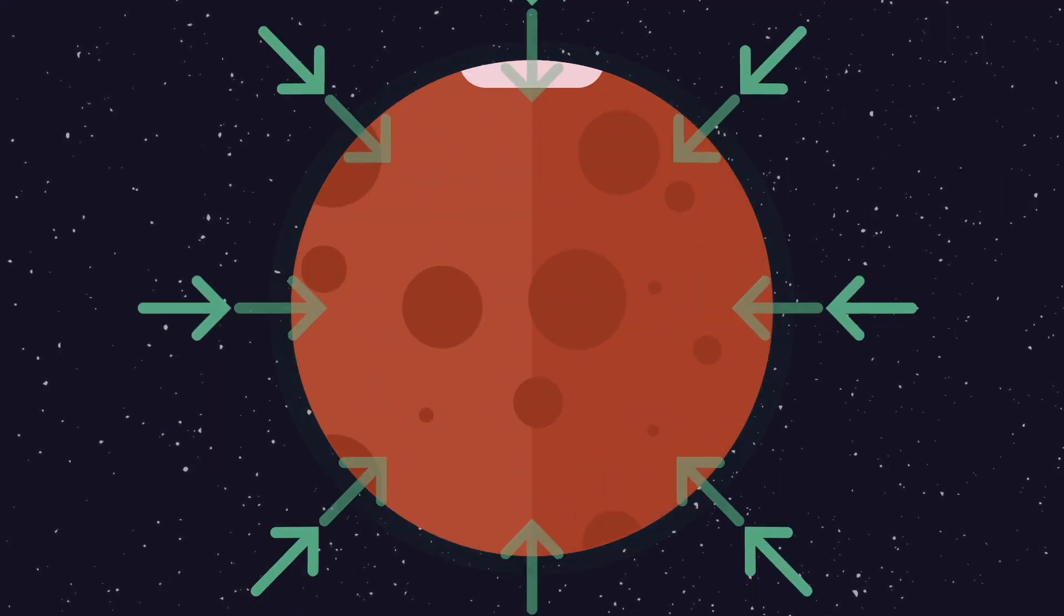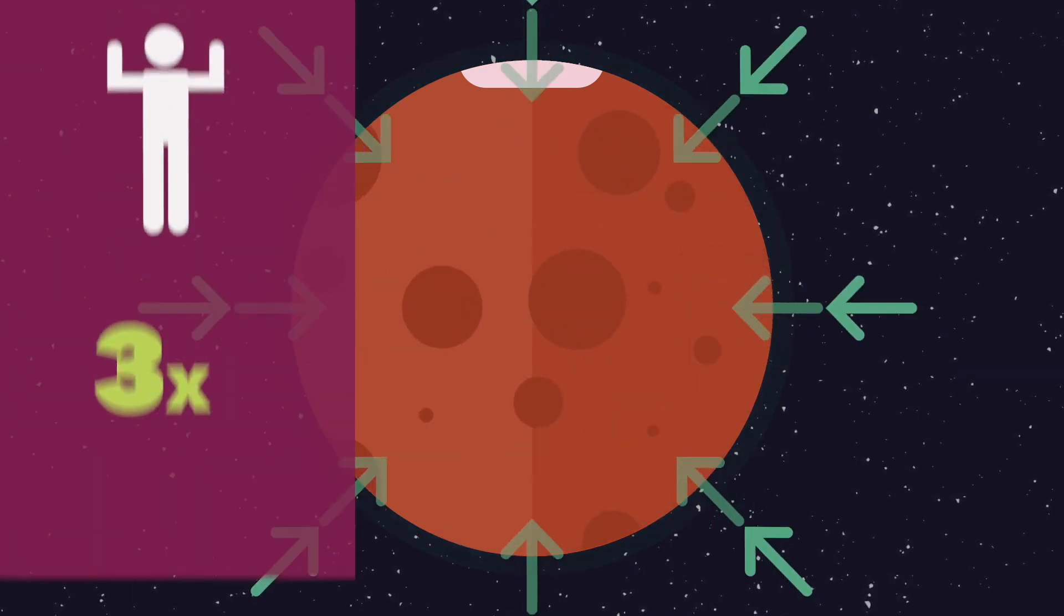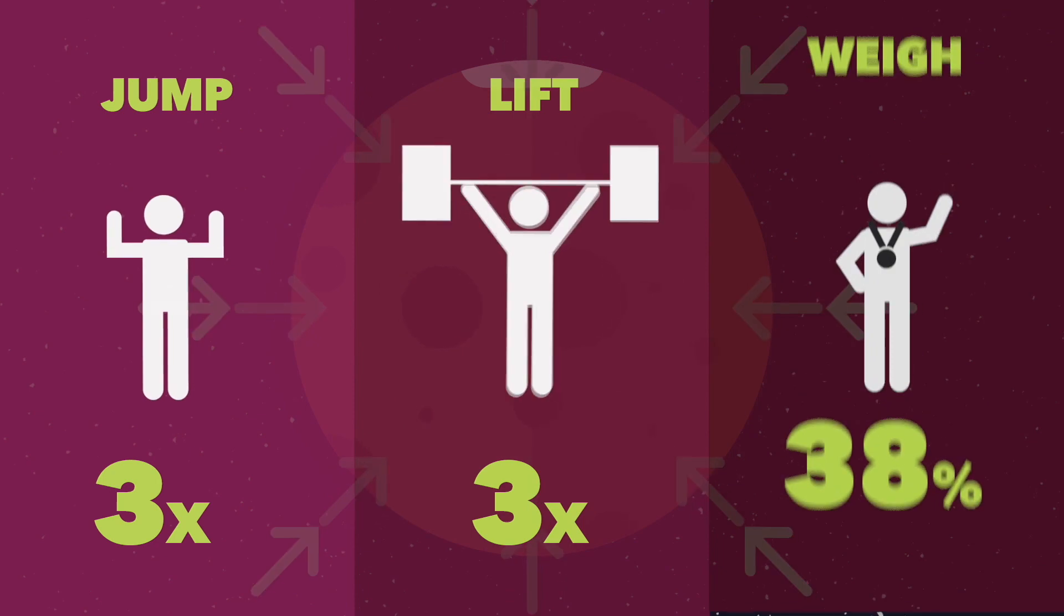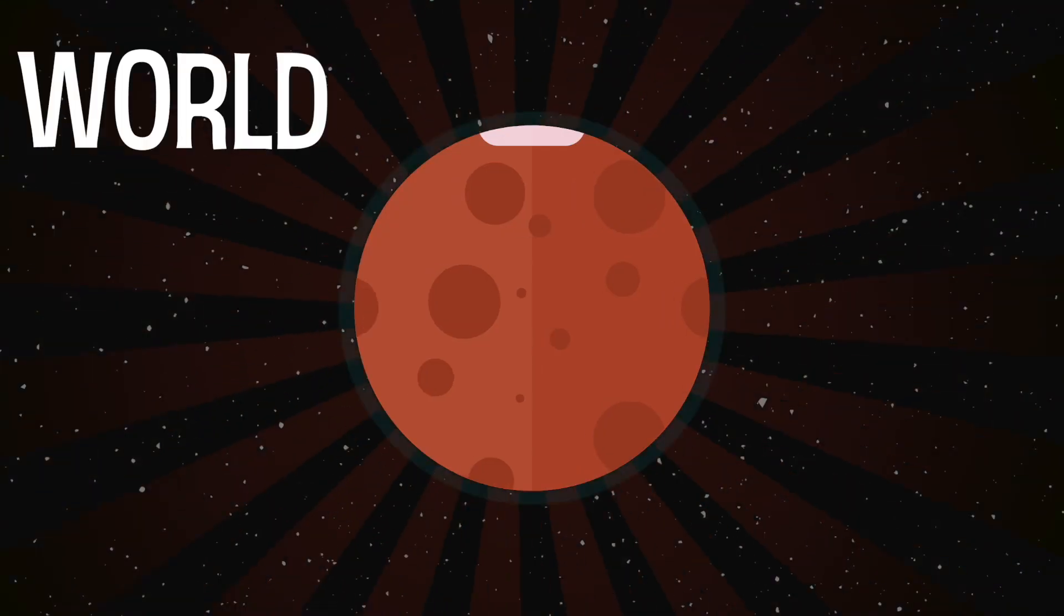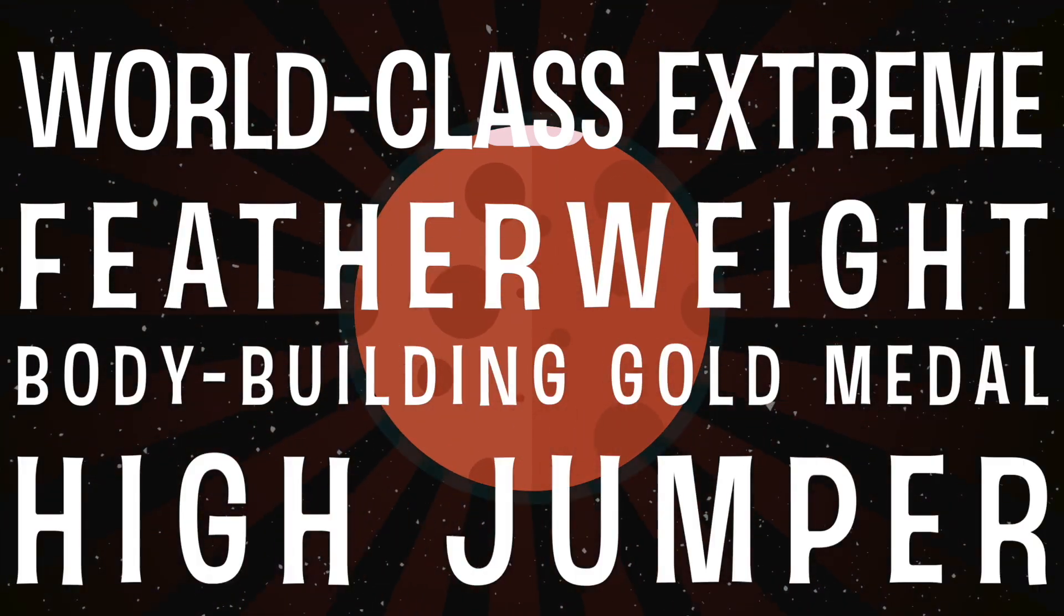With its smaller size and mass, Mars only has 38% of the Earth's gravity, which means you could jump around three times as high, lift three times as much weight, but only weigh 38% of what you weigh on Earth. So theoretically on Mars, you could be a world-class extreme featherweight bodybuilding gold medal high jumper, but that's totally your call.